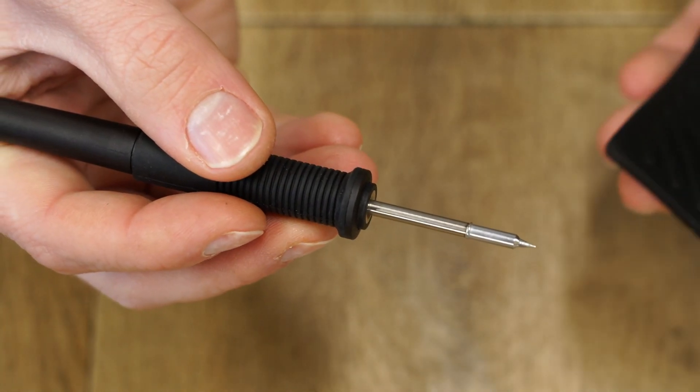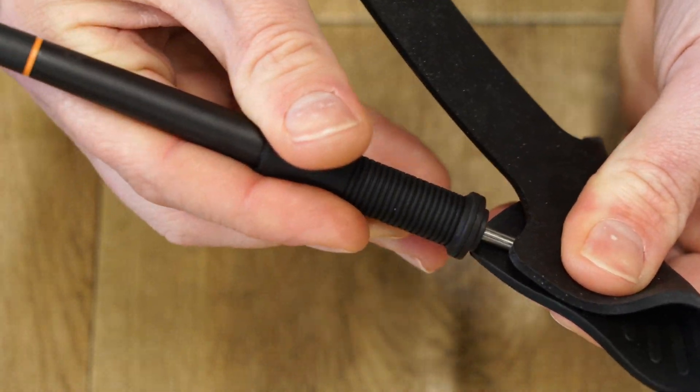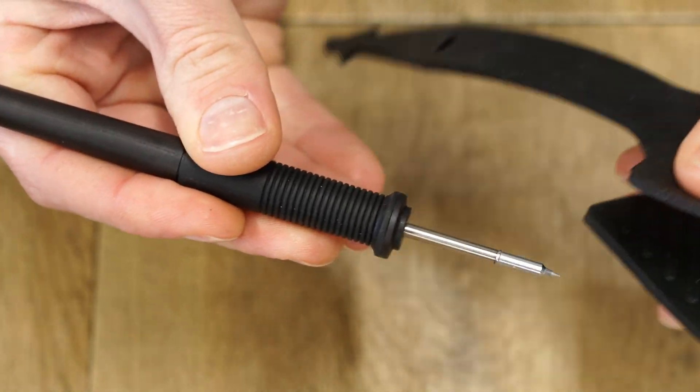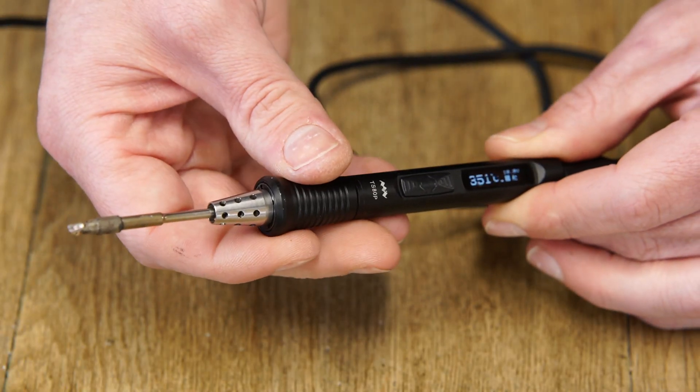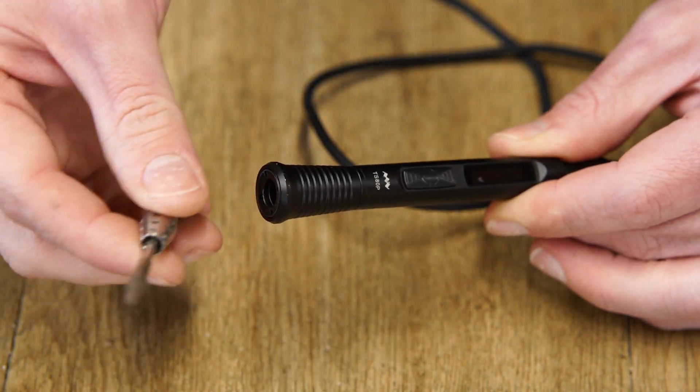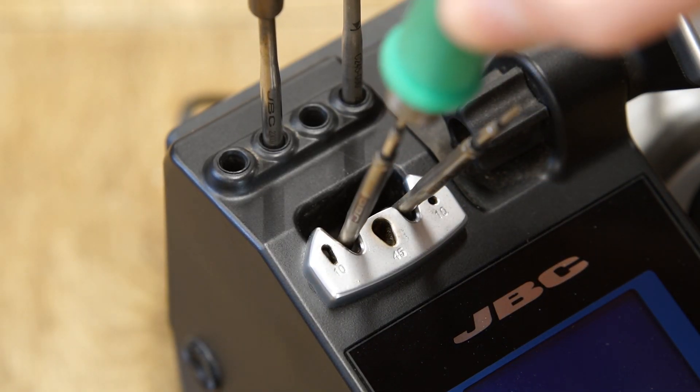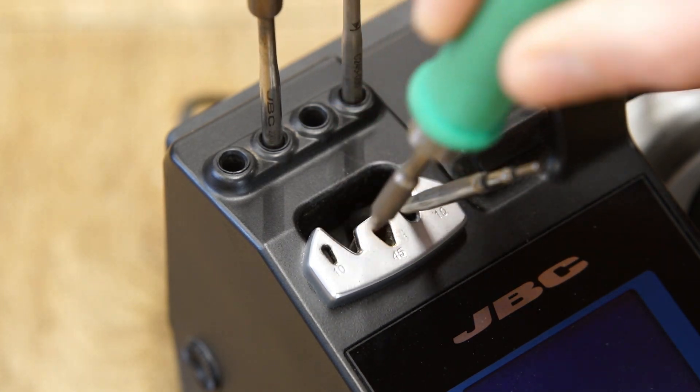To swap out the tips when hot, I can use the included silicon pad. In my opinion this method isn't as good as hot swapping methods found on the MiniWear TS-80P, or my JBC. But for the price I can forgive this.